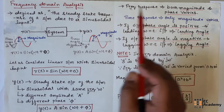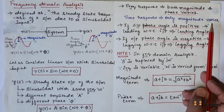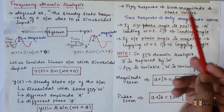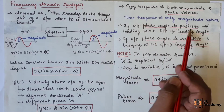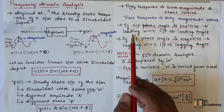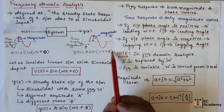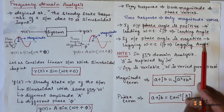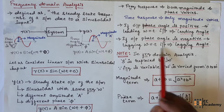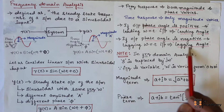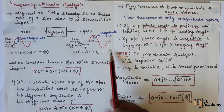Always remember: in frequency response, both magnitude and phase will vary. In time response, only magnitude was varying, but in frequency response, both magnitude as well as phase will vary. If the output phase angle φ is positive, the output is leading with respect to input, and φ is known as the leading angle. If the output phase angle φ is negative, the output will be lagging with respect to input, and φ is known as the lagging angle.